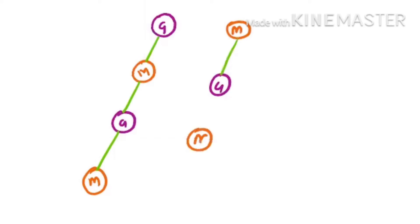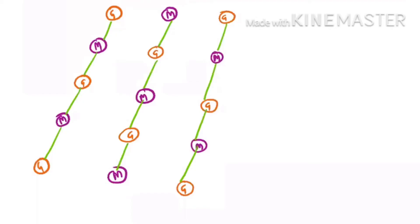Now see how the cell wall is organized. NAG and NAM alternate with glycosidic bonds between them: NAG — glycosidic bond — NAM — glycosidic bond — NAG, and so on. These long strips of modified sugars are arranged alternately and held together by glycosidic bonds.